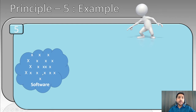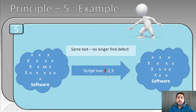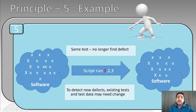For example: software has 20 defects. You run the script first time and find 5 defects — the defect count is reduced. If you run the same test cases without modifying them a second, third, or fourth time, you won't find any new defects. The software is the same; if you ran the tests efficiently, you found all discoverable defects in the first run. To find the remaining defects you must change your test cases. That is the pesticide paradox.